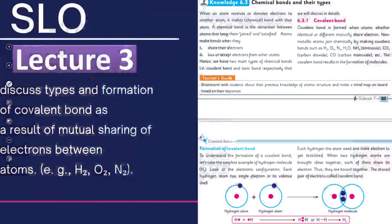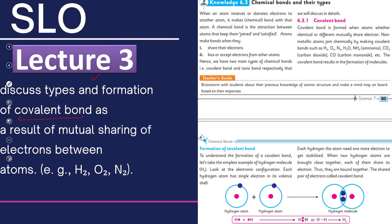In lecture 3, we will discuss the first type of chemical bonds, which are covalent bonds. In this SLO, we will discuss the formation of covalent bonds, which are formed as a result of mutual sharing of electrons. We will learn this concept by discussing a few examples like hydrogen, oxygen, and nitrogen.